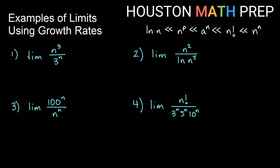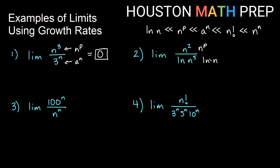For example, the limit of n³ over 3^n — this is indeterminate, and I could use L'Hopital's rule, but I can see polynomial growth on top and exponential growth on the bottom. Since exponential is quicker than polynomial, the bottom grows much faster, so this limit is just zero. For the limit of n^p over 5·ln(n) — polynomial growth over logarithmic growth — the top grows much more quickly, so this limit is infinite and the sequence diverges.